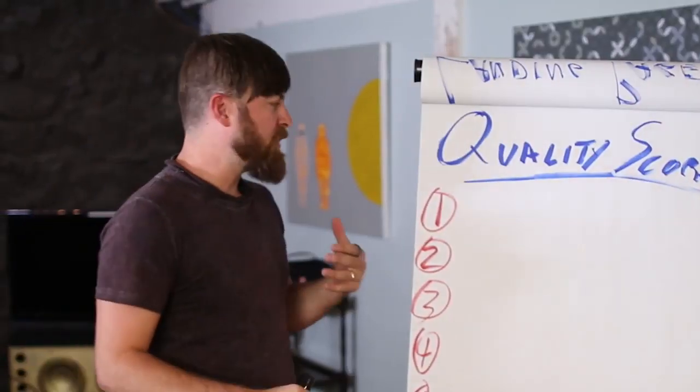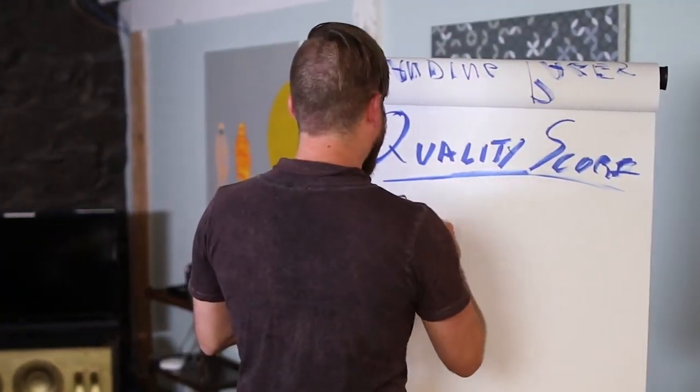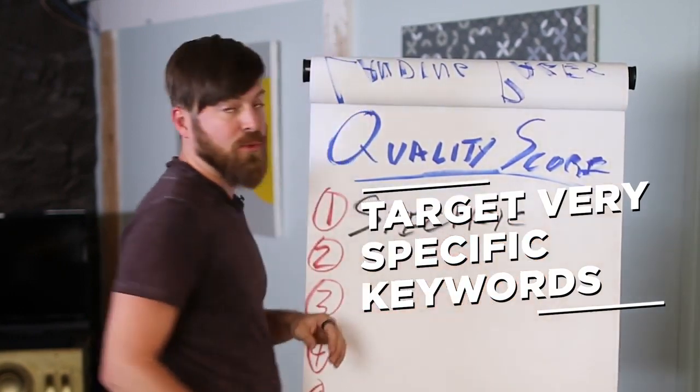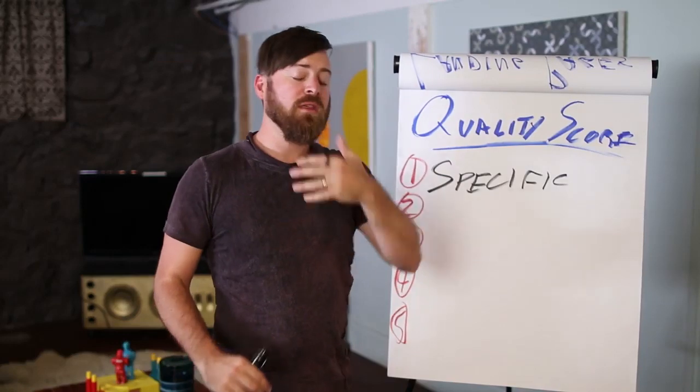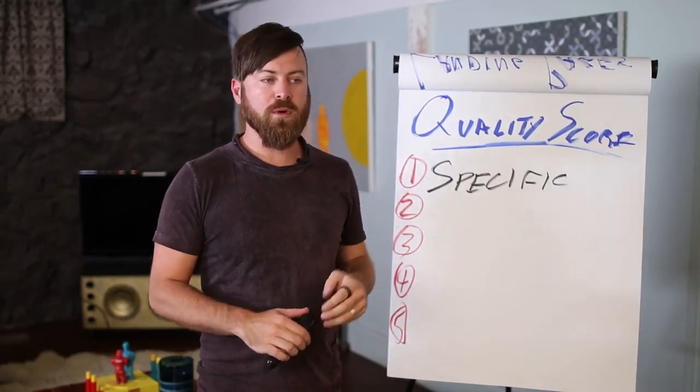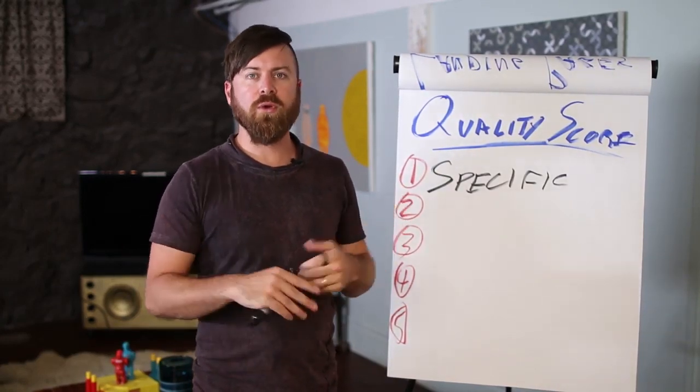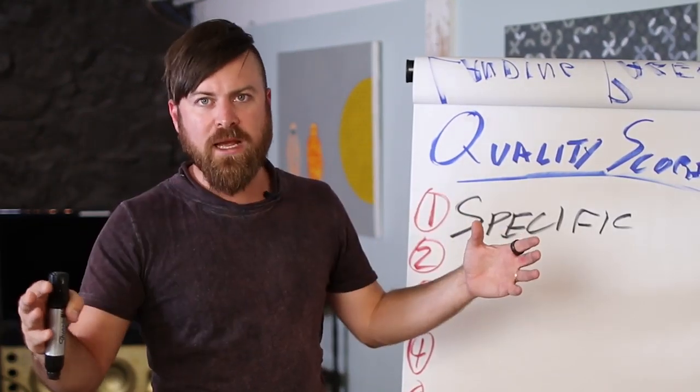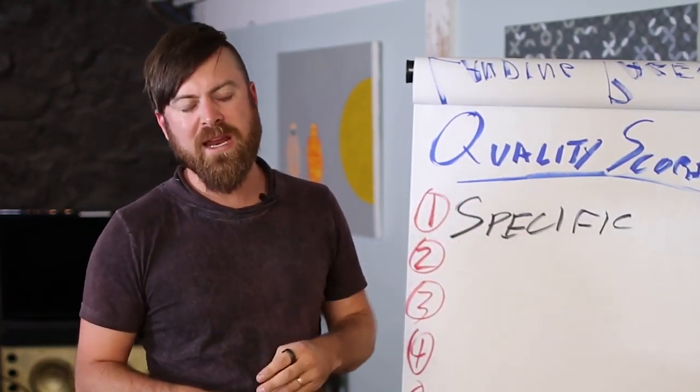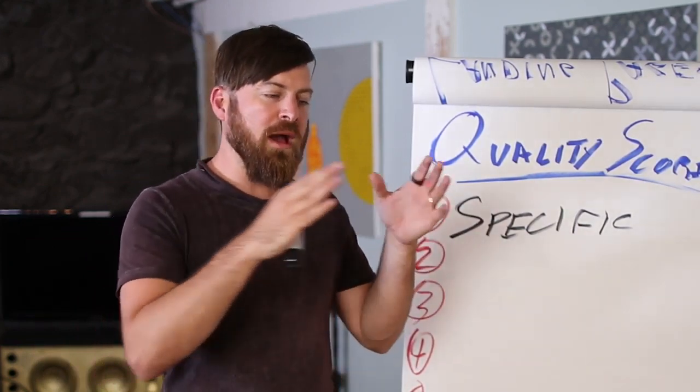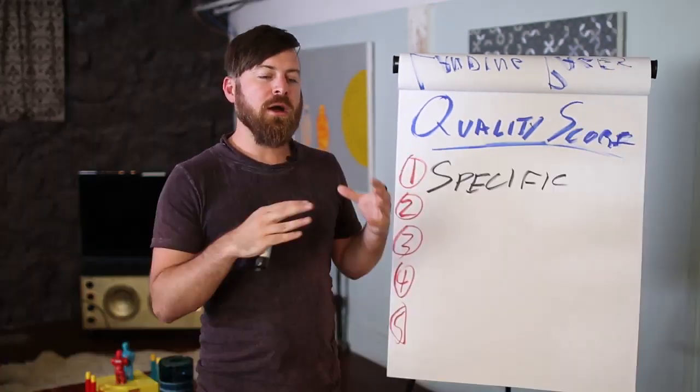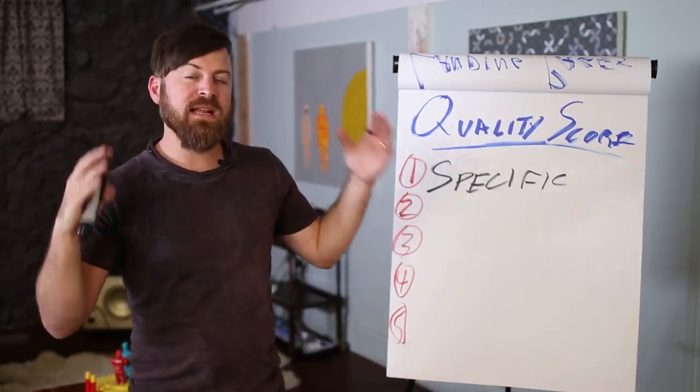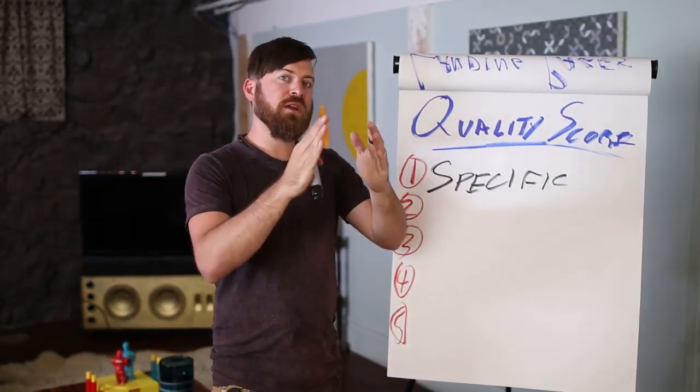The first thing you want to be aware of is you want to use as specific of keywords as possible. Using specific keywords is probably one of the biggest things you can do for AdWords. Instead of saying personal injury lawyer, go after long tail question-based keywords. If you're selling a weight loss product, go after keywords like how do I lose weight without dieting. That's a much better keyword than just targeting weight loss.